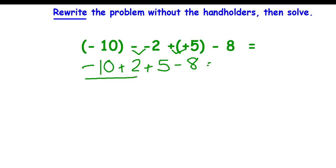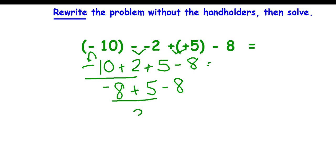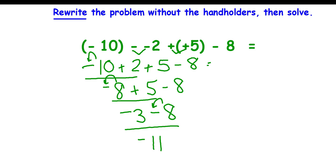I'm going to underline these two. The signs are different — I subtract. I use the sign in front of the biggest digit and everything else comes down. The signs are different — you subtract, use the sign in front of the biggest digit, rest of the problem comes down. The signs are the same — you add, use the sign in front of the biggest digit. So the answer to that problem is a negative 11.